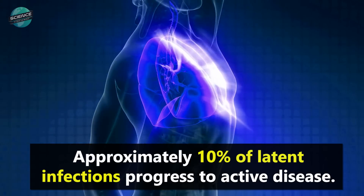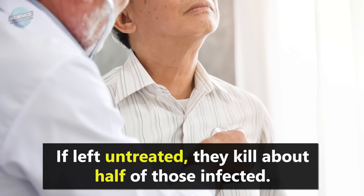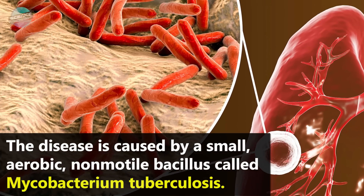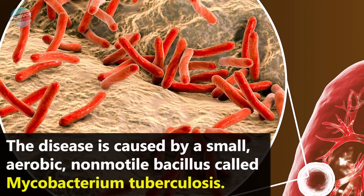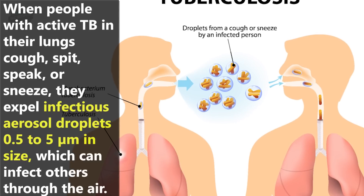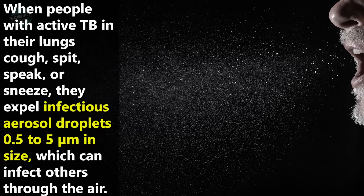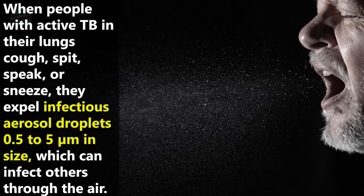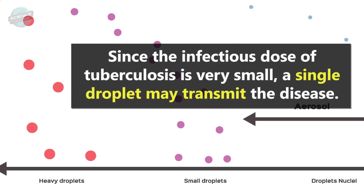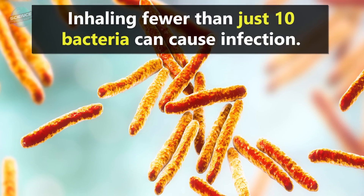Approximately 10% of latent infections progress to active disease. If left untreated, they kill about half of those infected. The disease is caused by a small, aerobic, non-motile bacillus called Mycobacterium tuberculosis. When people with active TB in their lungs cough, spit, speak, or sneeze, they expel infectious aerosol droplets 0.5 to 5 micrometers in size, which can infect others through the air. Since the infectious dose of tuberculosis is very small, a single droplet may transmit the disease.